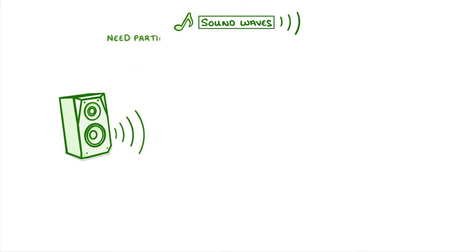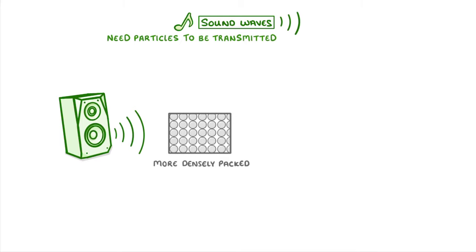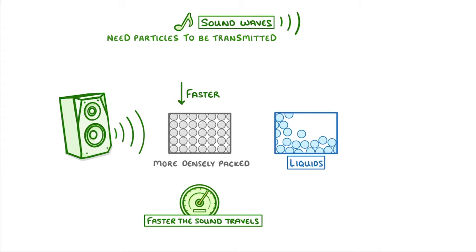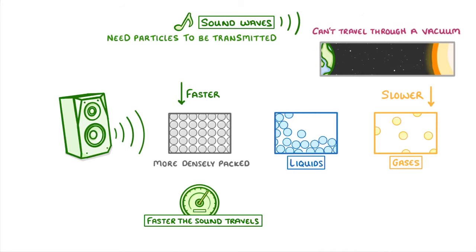Because sound waves need particles to be transmitted, the more densely packed the particles are, the faster the sound travels. This is why sound travels faster in solids than in liquids, and slowest of all in gases. It also explains why sound can't travel at all through a vacuum, because there are literally no particles for the sound to vibrate through.